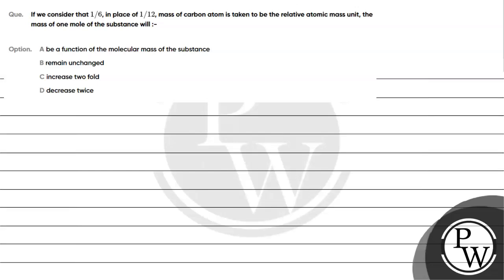Let's read this question. The question says: if we consider that 1/6, in place of 1/12, of the mass of a carbon atom is taken to be the relative atomic mass unit, the mass of one mole of substance will — option A: be a function of molecular mass; option B: remain unchanged; option C: increase twofold; option D: decrease twice. The key concept for this question is atomic mass.